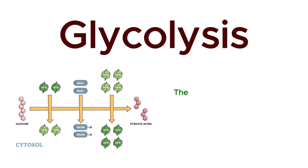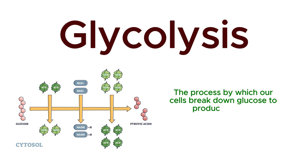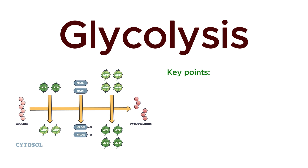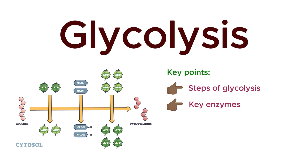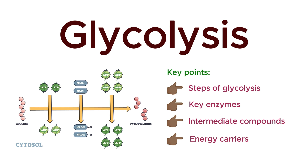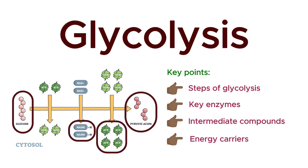Glycolysis is the process by which our cells break down glucose to produce energy. We'll walk through each step of glycolysis, discussing the key enzymes, intermediate compounds, and energy carriers involved. By the end of this video, you'll have a comprehensive understanding of how glucose is converted into pyruvate, generating ATP and NADH in the process. So, let's dive into the fascinating world of glycolysis.